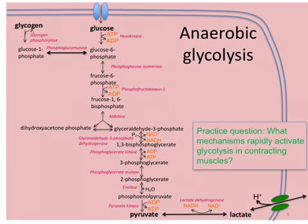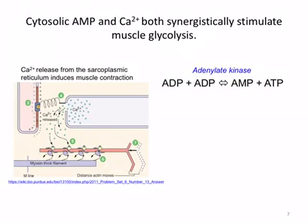Practice question: What mechanisms rapidly activate glycolysis in contracting muscles? A clue to the mechanisms is that calcium is released from the sarcoplasmic reticulum during the process of muscle contraction, and it also activates anaerobic glycolysis.